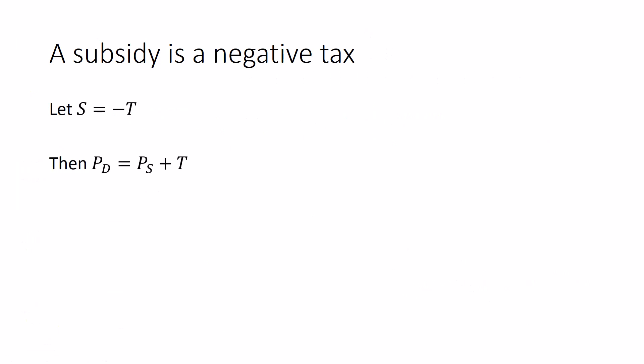There's a lot of stuff where we do this. So, let's let the subsidy equal a negative tax. In this equation, PD equals PS plus T, changes to PD equals PS plus a negative S. Which can be rewritten as PD plus the subsidy equals PS. So, I don't care if you remember it as a negative tax or if you remember the separate equation for the subsidy. It's the same thing.